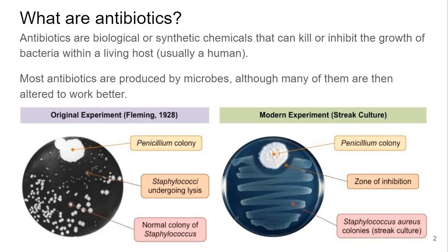So first, let's talk about antibiotics. Antibiotics are biological or synthetic chemicals that can kill or inhibit the growth of bacteria within a living host. Usually we're talking about humans, but this might also be your dog, cat, or a cow. Most antibiotics are produced by microbes, although many of them are then altered chemically to work better. So when we utilize antibiotics medically, we're generally harnessing something that evolved in nature that microbes use for communicating with or killing neighboring microbes in order to out-compete them.